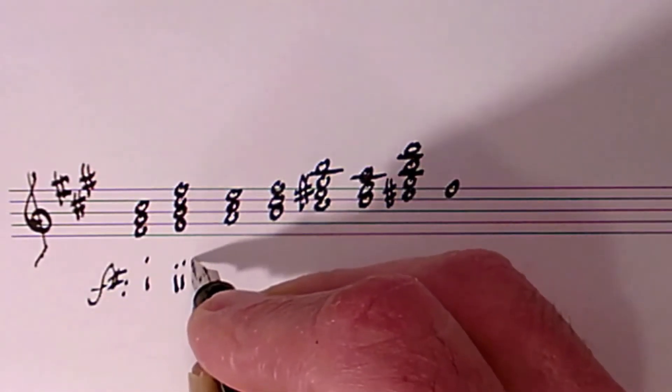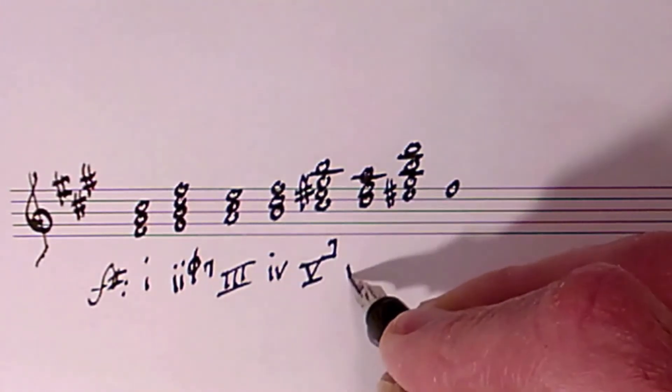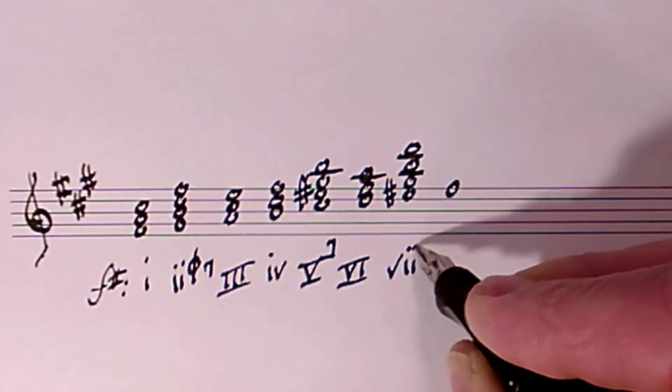So here are the chords. The one, minor. The two, half-diminished seven. The three, that's major. The four, that's minor. The five, seven. The six, that's major. And the seven, diminished seven.